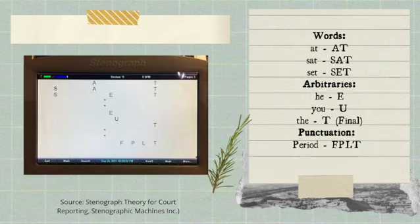Here on this slide, we can see on the left part the stenograph notes, and on the right side are the transcriptions of the stenograph notes. So we can see the word 'at' is equivalent to vowel A, final T. The strokes for 'at' are vowel A and final T — you press vowel A and final T simultaneously to form the word 'at'. That is also the same with the word 'sat': initial S, vowel A, and final T.